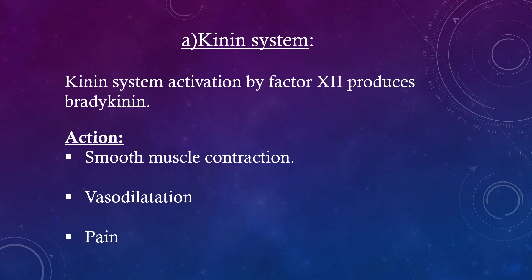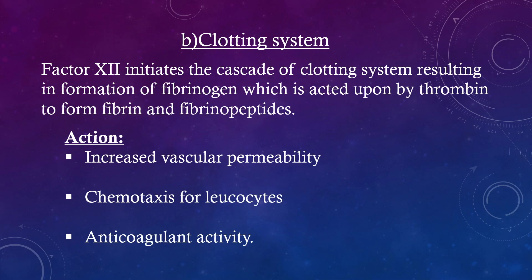Kinin system. Kinin system activation by factor XII produces bradykinin. Actions: smooth muscle contraction, vasodilatation, and pain. Clotting system. Factor XII initiates the cascade of the clotting system, resulting in formation of fibrinogen, which is acted upon by thrombin to form fibrin and fibrinopeptides. Actions: increased vascular permeability, chemotaxis for leukocytes, and anti-coagulant activity.